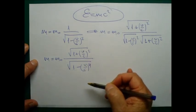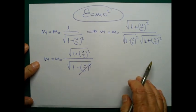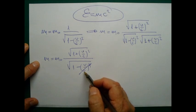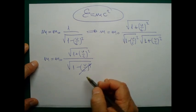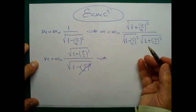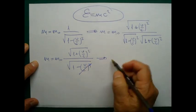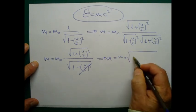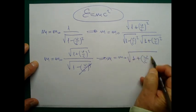This number here is very small because V is much, much less than C. So if I neglect this number here, which is near 0, I have M equals M₀ times 1 plus V over C squared under the root.